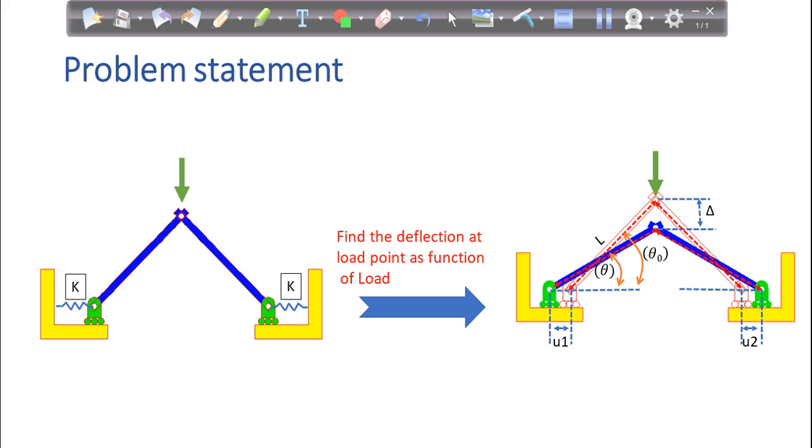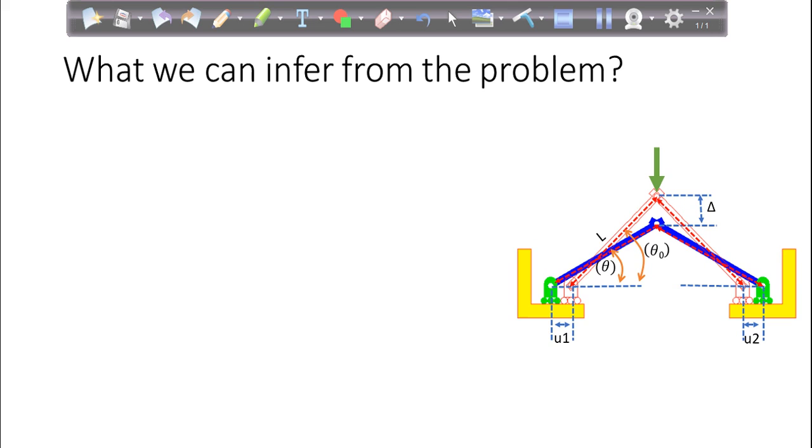So this will be the deflected position. What will happen when you apply the load at point B? Well, our frame will deflect like this. So what you can infer from the problem? As the load is applied, it will cause the frame to deflect. And it is very easy for you to tell all the physical changes because you have already visualized the problem in the beginning.